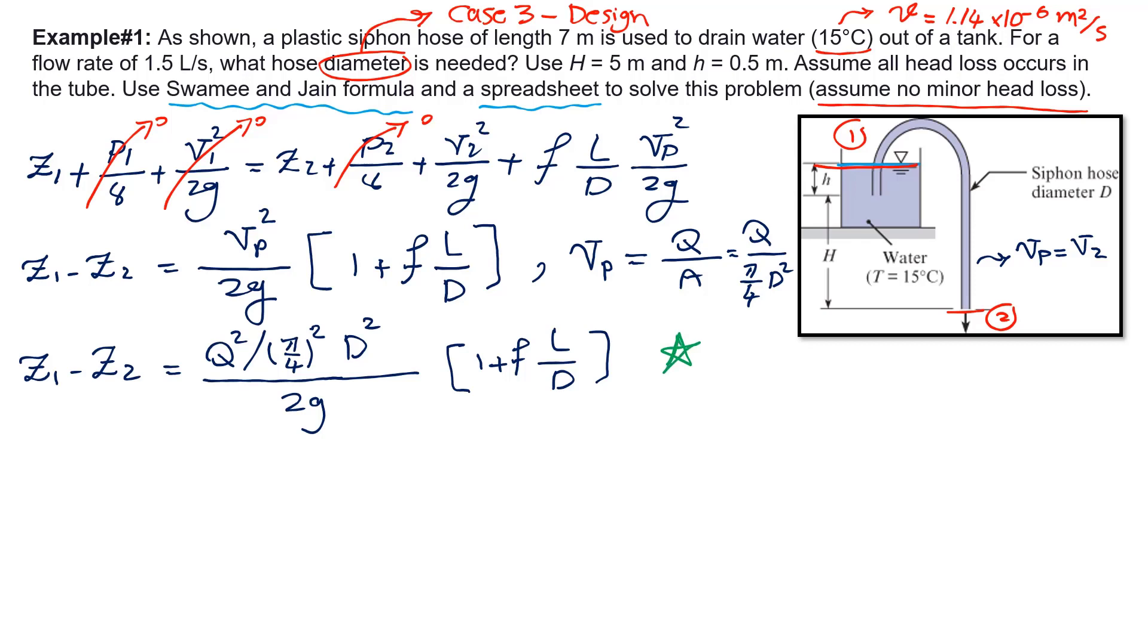I can also write Reynolds number. Reynolds number can be written as velocity times diameter divided by nu. Remember that we can write velocity in terms of Q and diameter, so we can insert that equation here as well. Which would be Q over pi over 4 times D squared, then times D over nu. It can be simplified and written as 4Q over pi D times kinematic viscosity.